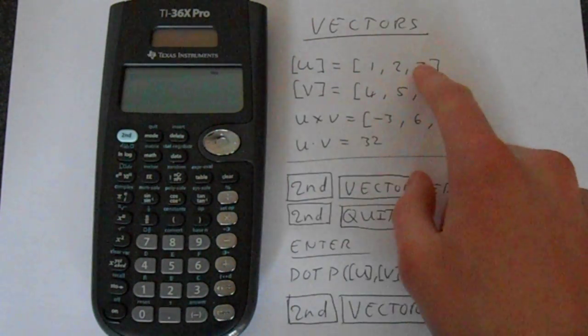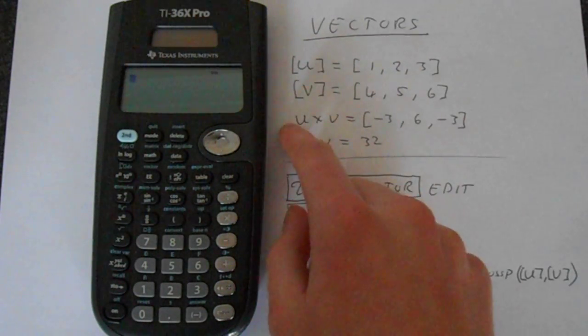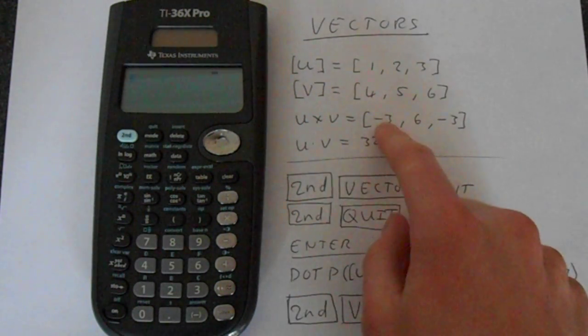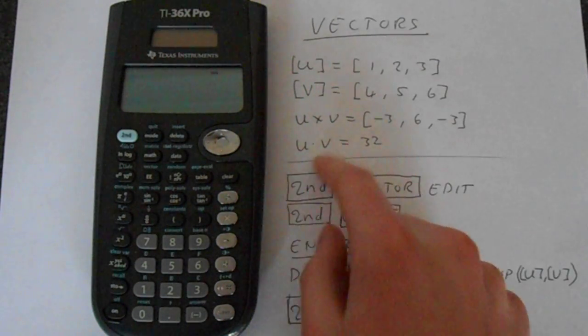We're going to make u just 1, 2, 3, and v we're going to make 4, 5, 6. And we're going to do u cross v, which is minus 3, 6, minus 3, and u dot v, which is 32.